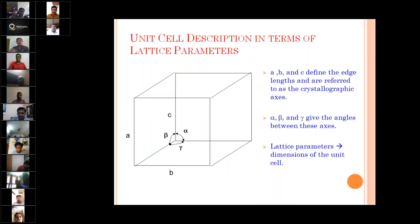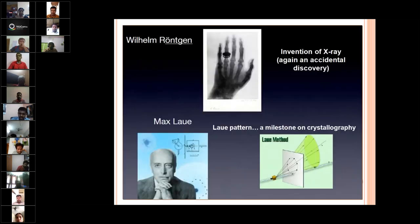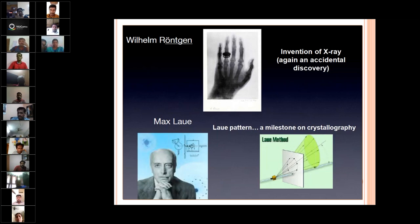Haüy is responsible for finding out the unit parameters A, B, C, Alpha, Beta, Gamma, etc. There are two more important persons. One is Röntgen, who accidentally invented X-rays, because nowadays X-rays are popularly used for the diffraction work of crystals. Hence, they tried to find out the structure of crystal structures and also molecules, as well as atomic bonding. Without X-rays, it is not possible to discuss crystallography or anything else.